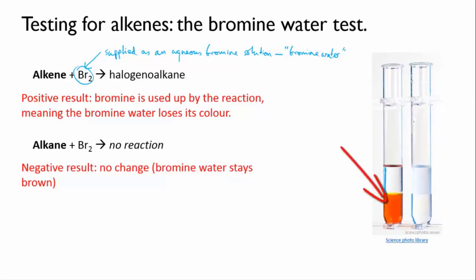So the essence of the test is if you have an unknown organic liquid and you want to know if it's an alkane or an alkene, you add bromine water and you shake it. If the bromine water loses its colour, it's an alkene and if it stays brown, it's an alkane.